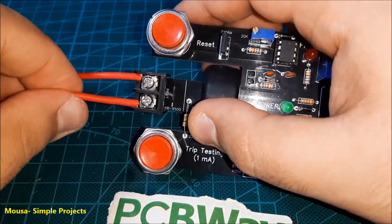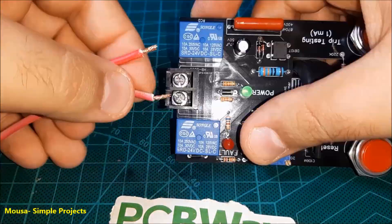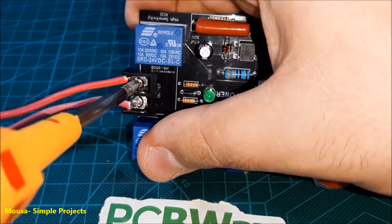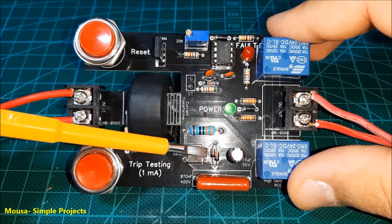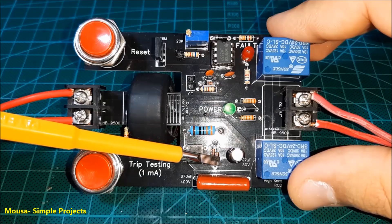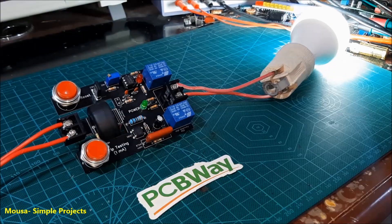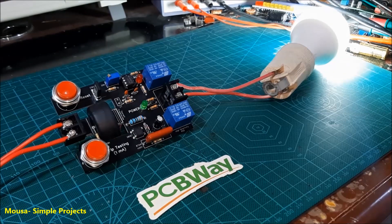Connect the mains voltage to the input and the load to the output. Because I haven't a one-watt zener diode, I connected two half-watt in parallel. Then press the test push button. If the circuit doesn't work, you have to adjust the sensitivity of the circuit using this potentiometer.